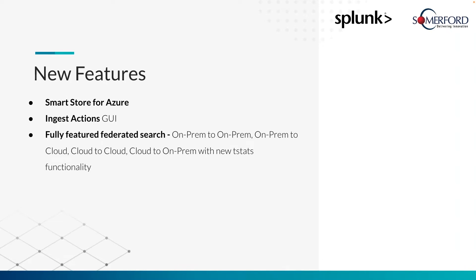They've also released — and probably the biggest feature upgrade or improvement — federated search and what they've done around federated search. Now we can support on-prem to on-prem, on-prem to cloud, cloud to cloud, cloud to on-prem, and we have extra features and functionality within the federated search portfolio. This is really good for environments that are dispersed around the cloud, around the world, or on regional bases, or clients that have both on-prem and cloud environments because different departments require that and you've got a high-level team managing the whole lot. You can now do things within one place across multiple different Splunk environments.